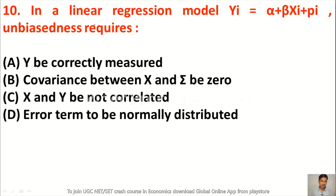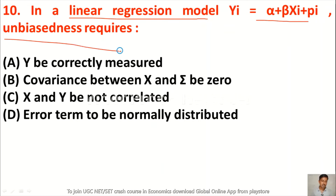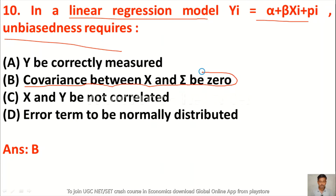Question 10: In a linear regression model Yi = α + βXi + εi, unbiasedness requires — option A y be correctly measured, option B covariance between x and the error term be zero, option C x and y be not correlated, option D error term to be normally distributed. The right answer is option B — covariance between x and the error term must be zero.